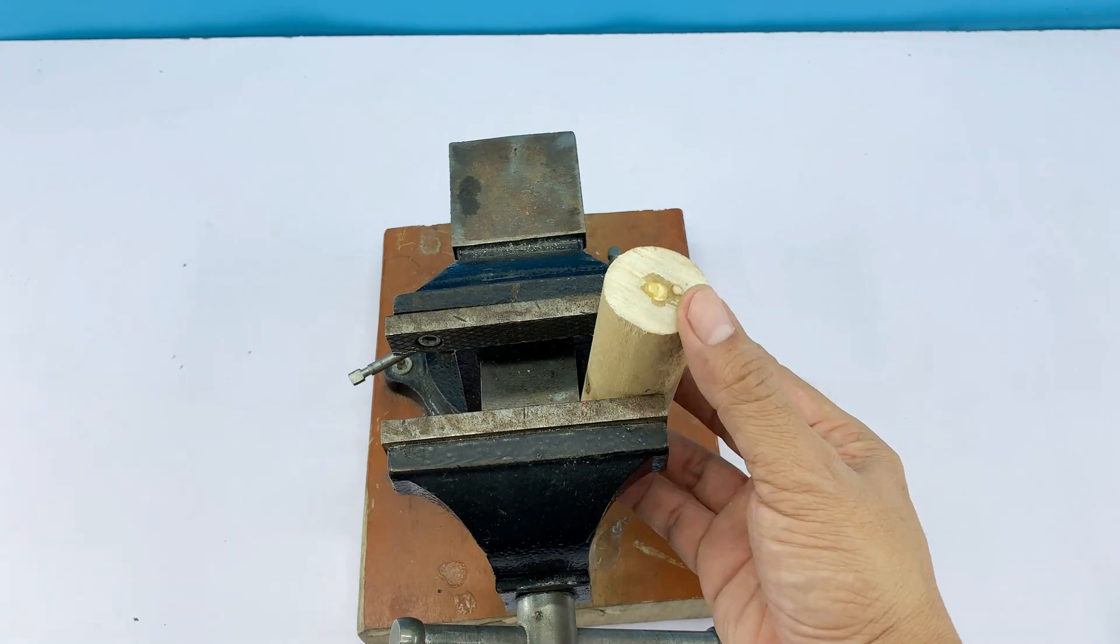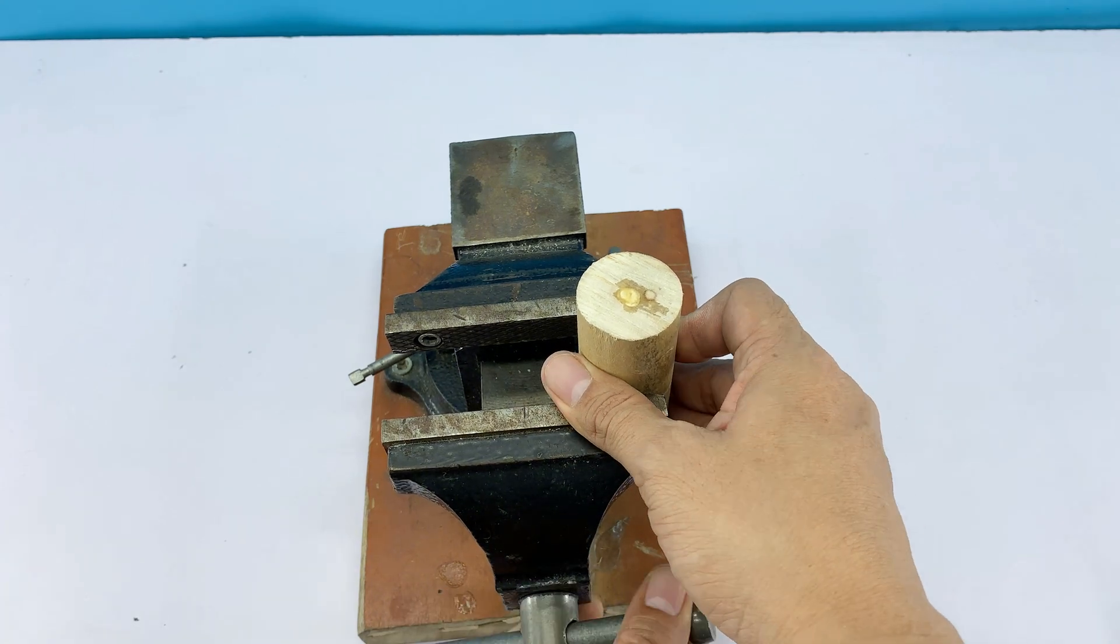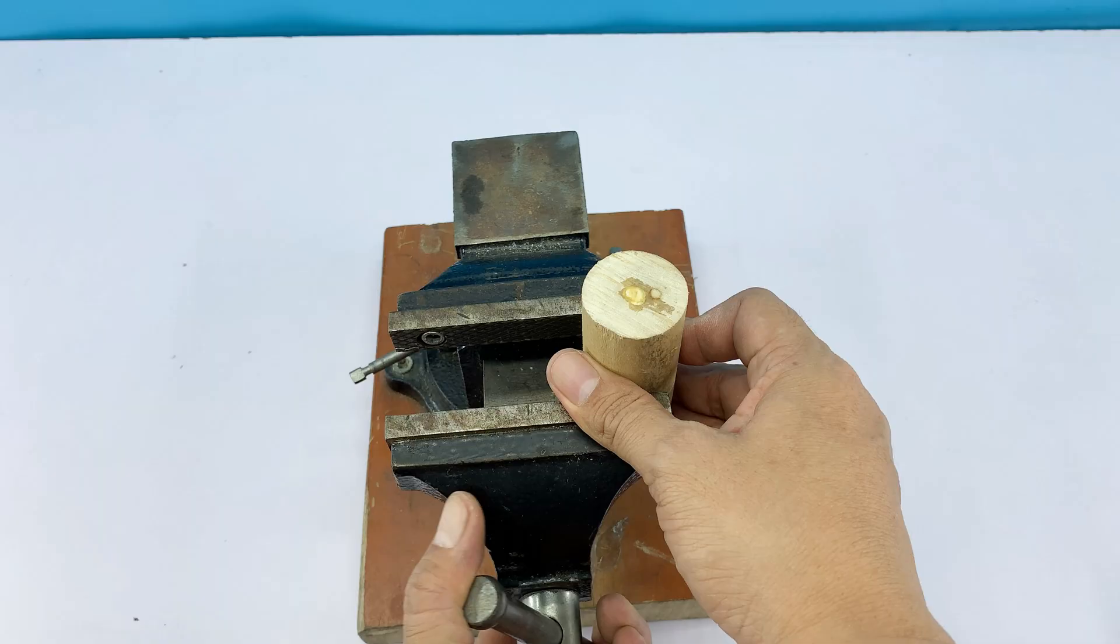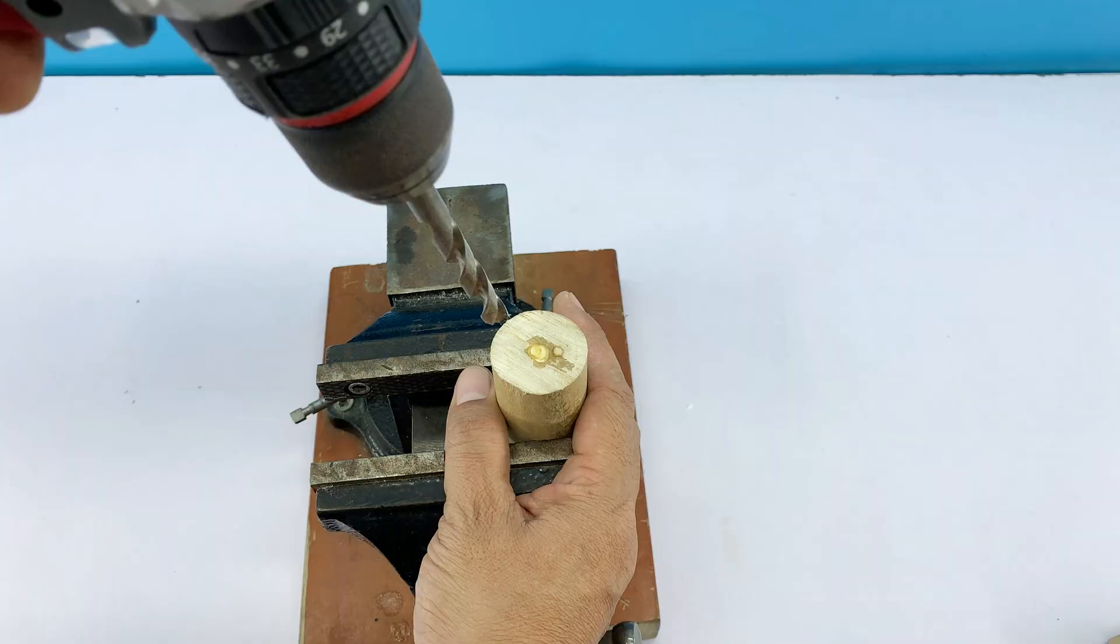The handle is essential, so I'm using a wooden grip. Drill a straight hole through it, just wide enough for the spark plug's threaded body. Test fit it. If the plug slides in neatly, the handle is perfect.